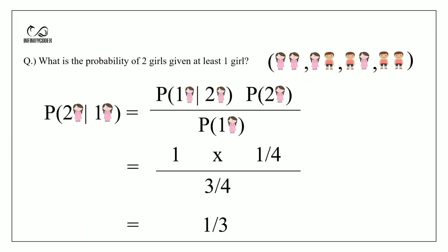So this is Bayes' Theorem. Now let's see an example. What is the probability of two girls given at least one girl?